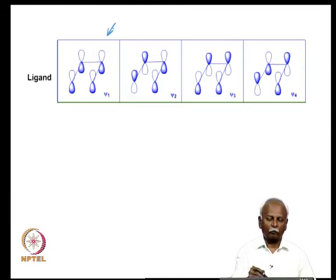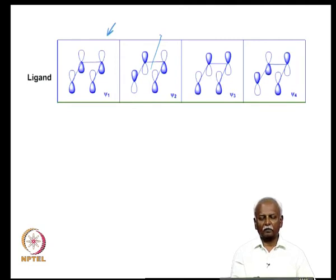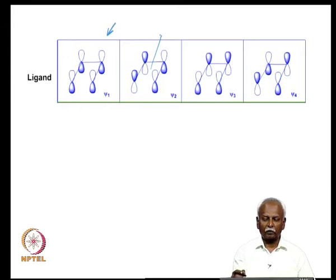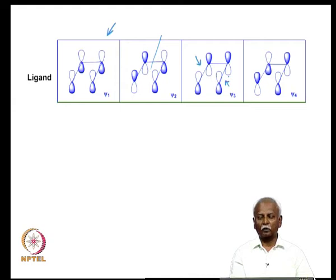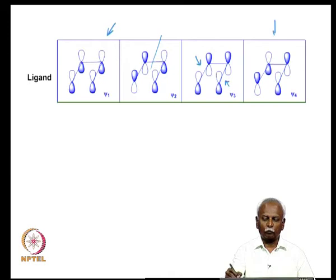The second molecular orbital has a single node and is denoted psi 2. The third molecular orbital has two nodes, and the fourth orbital has three nodes — that is the highest-energy orbital generated, but it would be vacant.